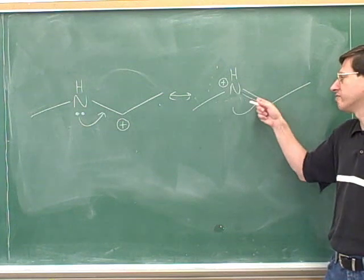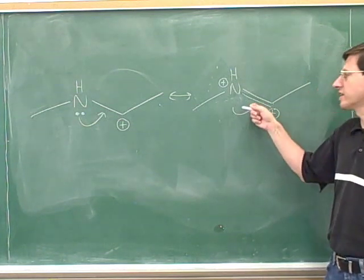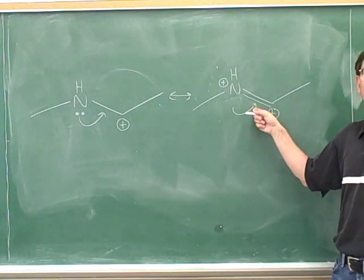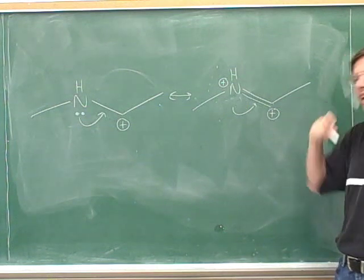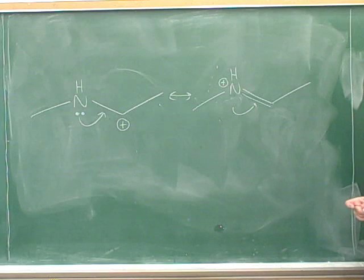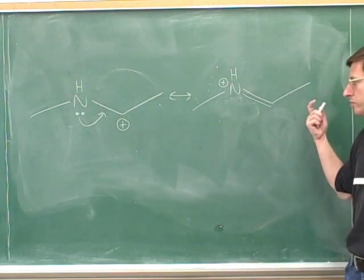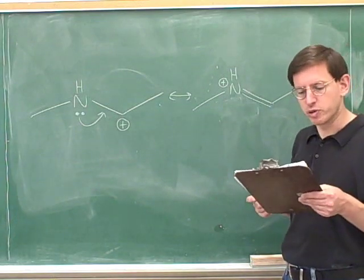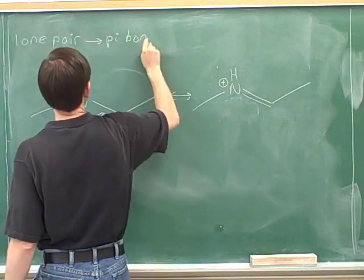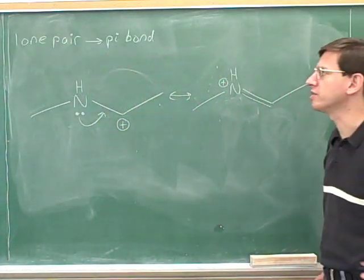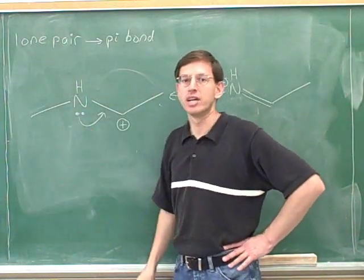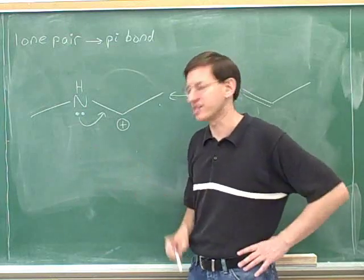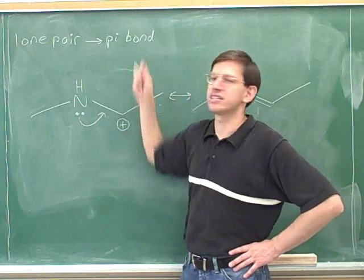The electrons from the lone pair have moved into the pi bond. The arrowhead was pointing toward the atom on the right, which started off positive. Since it's gaining electrons, it becomes less positive — it now has zero formal charge. We erase the arrow because we've accomplished all the moves it indicated. The move we just learned is moving a lone pair into a pi bond: tail on the lone pair, head in the middle of the sigma bond to form a pi bond.